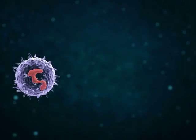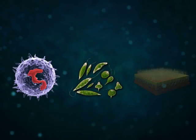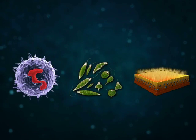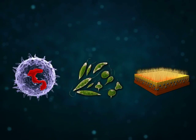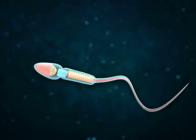Leukocytes, certain infusoria, glandular cells of some insects, and spermatozoa contain irregularly shaped nuclei.